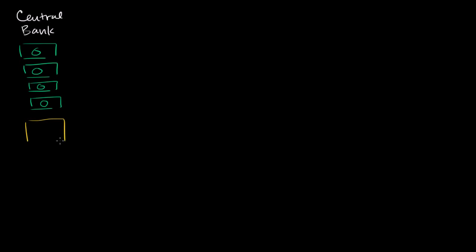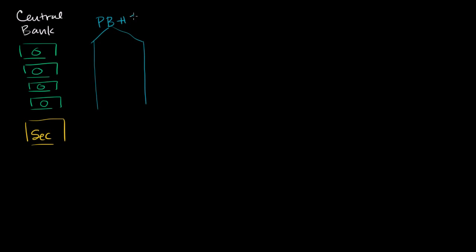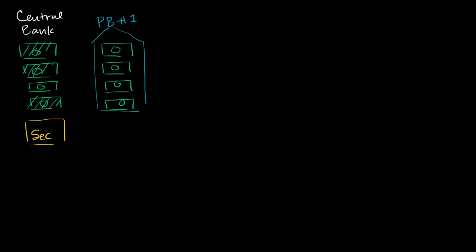The person they bought the security from decides to deposit it in a bank. They could directly deposit in a bank, or use the money from selling their security to buy things, and the person they bought from could deposit it in a bank. But one way or another, we can imagine it all gets deposited into private bank number one. So now all of these dollars are transferred to private bank number one, and the Federal Reserve is no longer in possession of them.